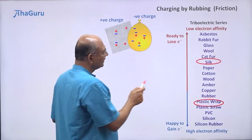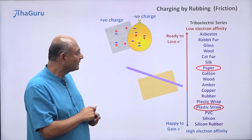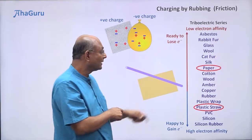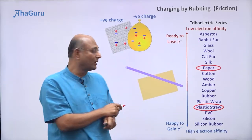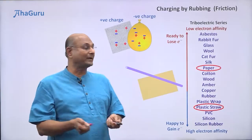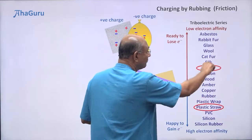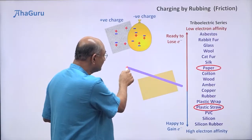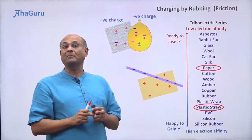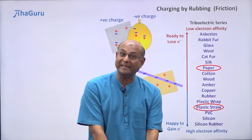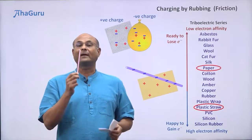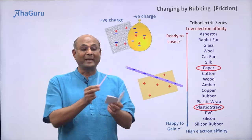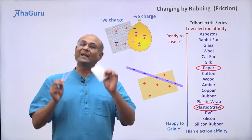Let us look at two more: paper and plastic straw. Paper doesn't like electrons very much — it's ready to lose its electrons, so it has low electron affinity compared to plastic straw. Plastic straw is at the bottom of the series, so it has high electron affinity. The plastic straw will take the electrons and the paper will give them up, so electrons jump from paper to the plastic straw. To demonstrate this, I have a piece of paper and two straws — both straws and the paper are currently neutral. By rubbing, I am going to charge these straws.